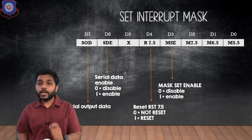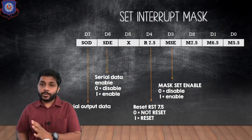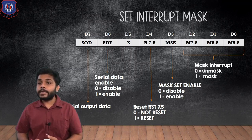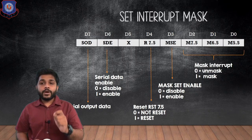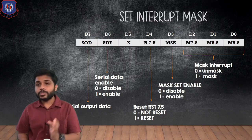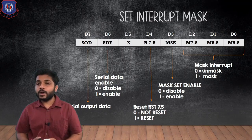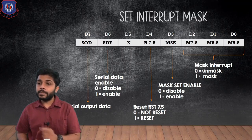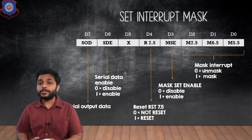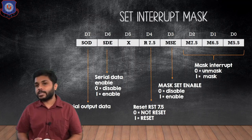The bits D0, D1, and D2 control masking of individual interrupts. If any of these bits is 0, those corresponding interrupts are unmasked. If any of these bits is 1, those interrupts are masked.